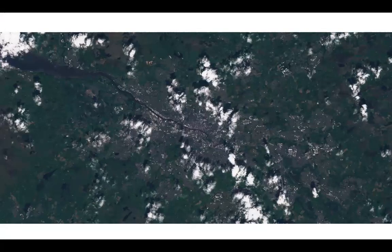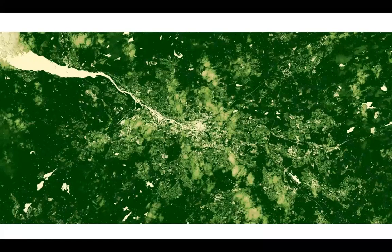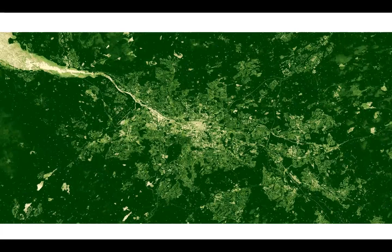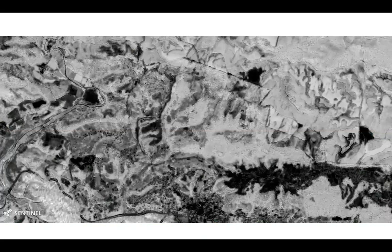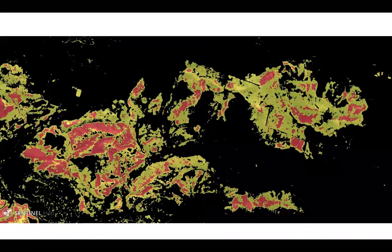Another nice feature of Sentinel Hub is multi-temporal processing, where you want to process several observations for each pixel and get results. Here is one example: we have a cloudy sky, and if you do the NDVI of this you'll get lots of cloud patches which are not really useful. But this is usually handled by creating a so-called maximum NDVI product where you combine data over the last month or last quarter, and then you just show the maximum NDVI - and you can do this on the fly. Another example is the normalized burn ratio before and after a fire - using a simple script combining these two dates, you immediately see which areas were damaged more and which less.